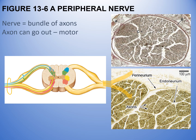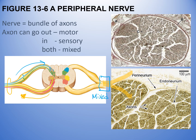You can have axons that bring information out of the spinal column — those are called motor neurons, which connect to the neuromuscular junction. You can also have axons that bring information into the spinal column — those are sensory axons. Both are part of nerves, and a spinal nerve has both, which is why spinal nerves are called mixed nerves: some axons bring information in, and some bring information out.